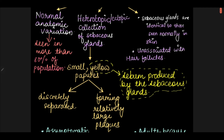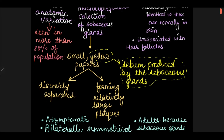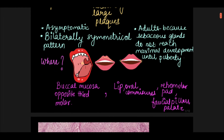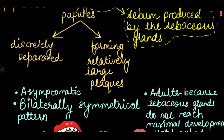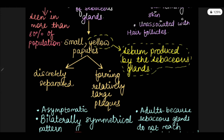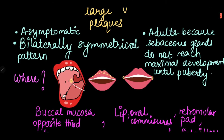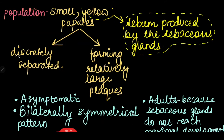They present as small yellow papules in the oral cavity, as you can see here. They are yellow because of the sebum that is produced by the sebaceous glands. Each of these granules is about one to three millimeters and is discretely separated from each other, and they may form relatively large plaques.